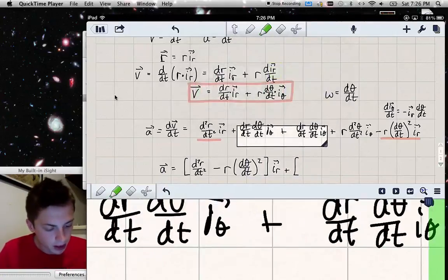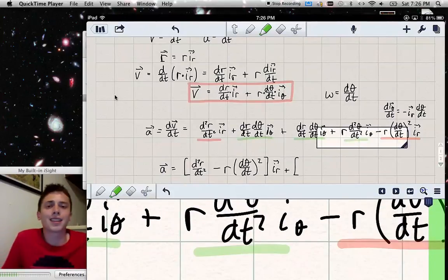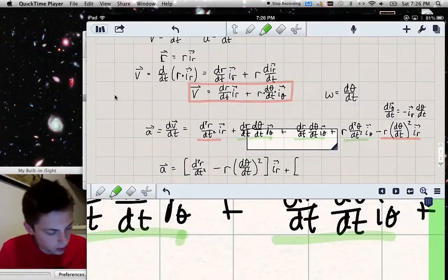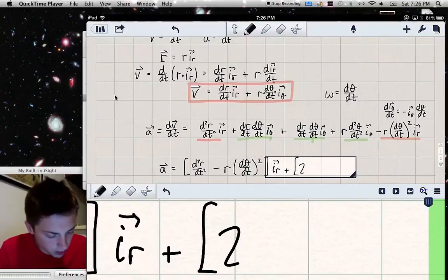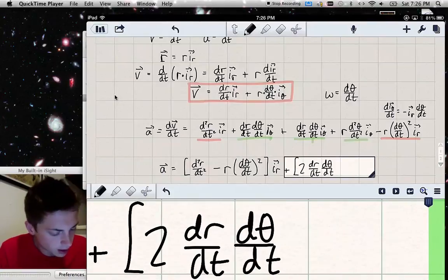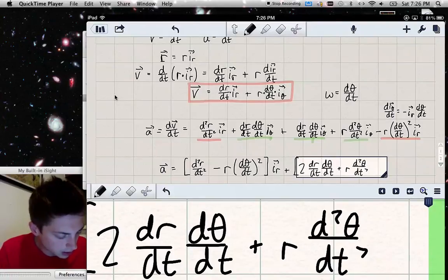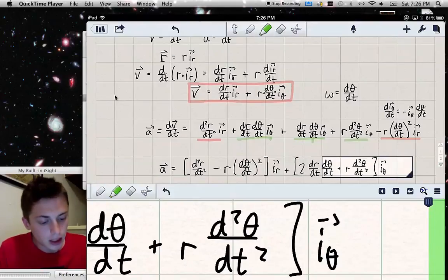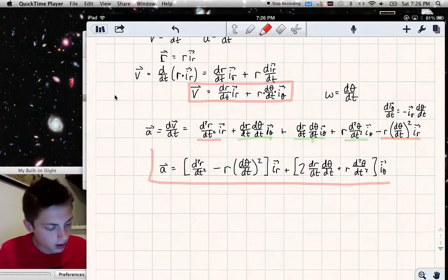So if I factor out an i_r, the first term will be d2r over dt twice, plus, second term, r, well, there's a minus sign. Don't forget the minus sign. Don't forget the minus sign. All righty. They both have i_r in it, so I write it like that. Now the second term. We got this one, we got this one, we got this one. All have i_theta in it. Notice that the first two, this one and this one, are exactly the same. So I just write two, dr dt, d theta dt, plus the third term, r, d2 theta dt twice, all times i_theta. Yeah, so there you go.